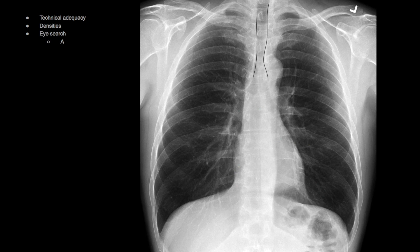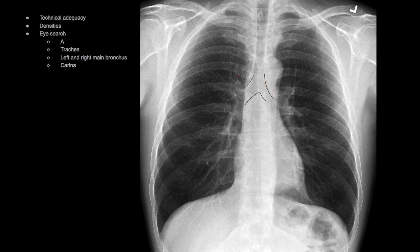We're going to start with A, which is airways. The structure pointed out here is the trachea. The structure pointed out here is the left and right main bronchus and the carina, which is the branch point of the trachea. You want to make sure the trachea is midline, and you want to make sure the carina angulation is not more than 100 degrees.